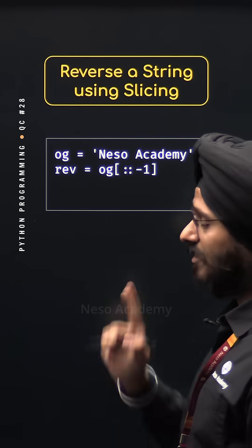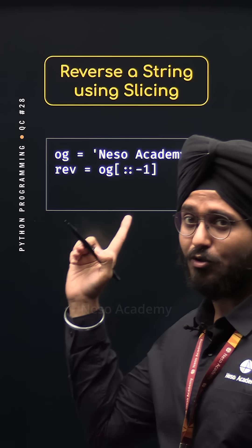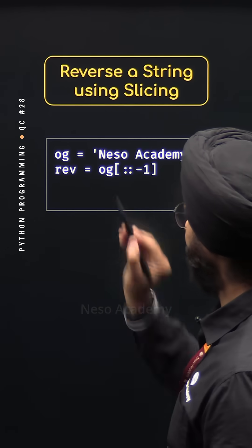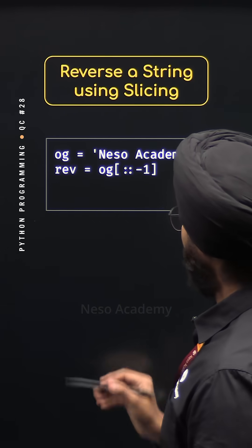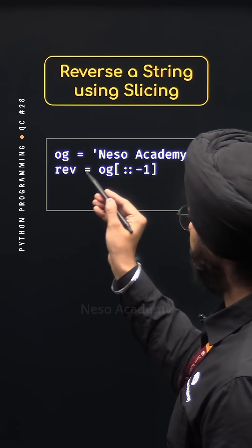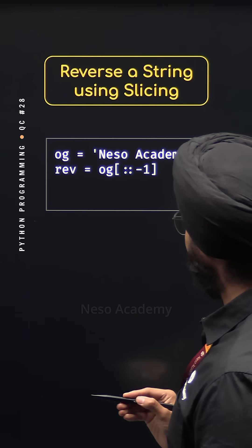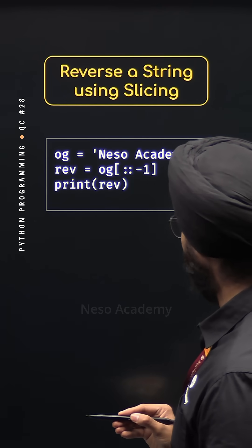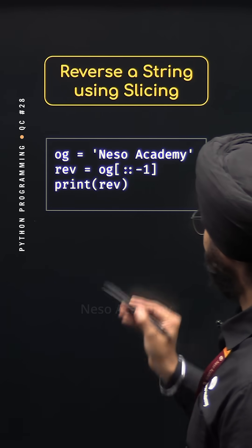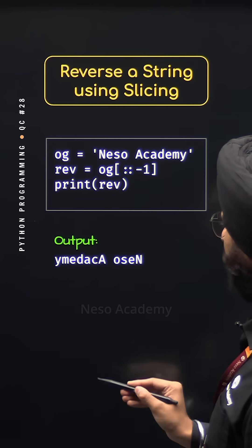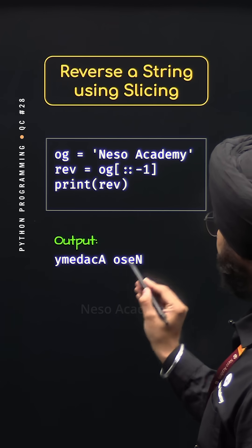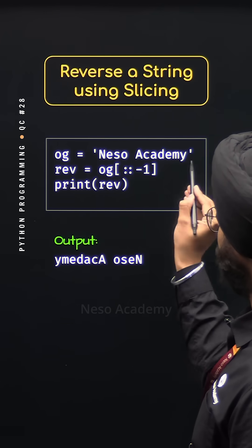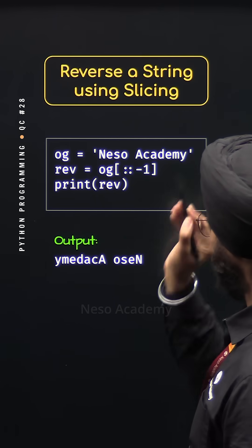So we will get the reversed version of this string in this rev variable. Now we can print the content of this rev variable with the help of the print function, and we will get the output which is the reversed version of this string Neso Academy.